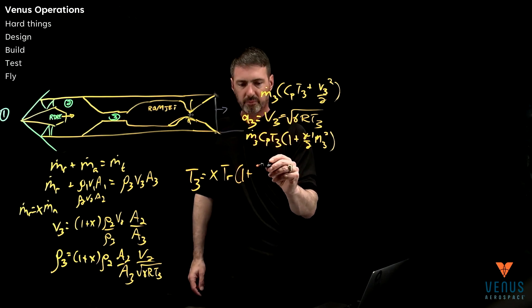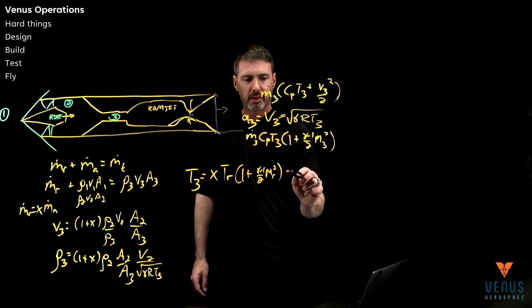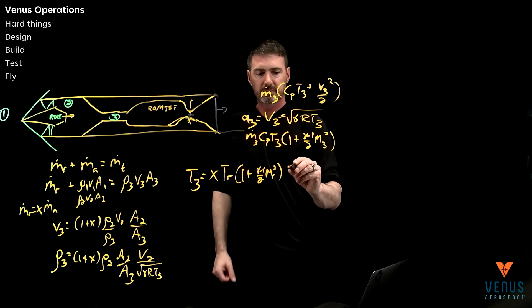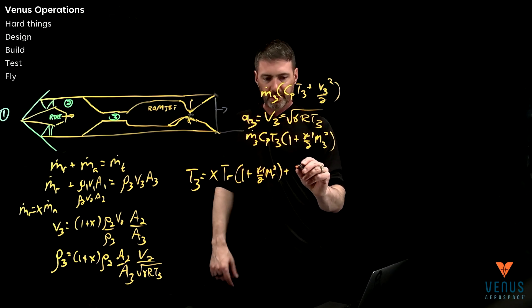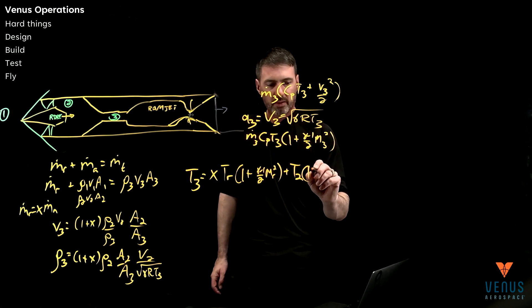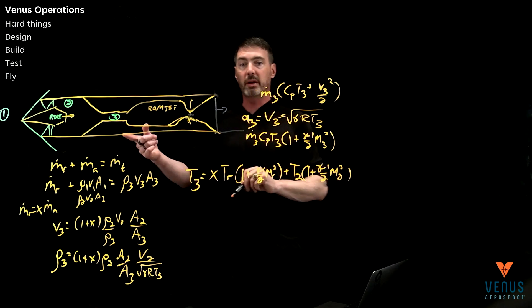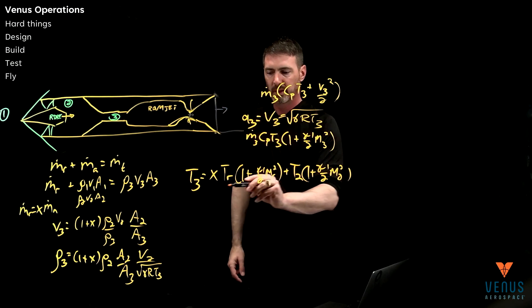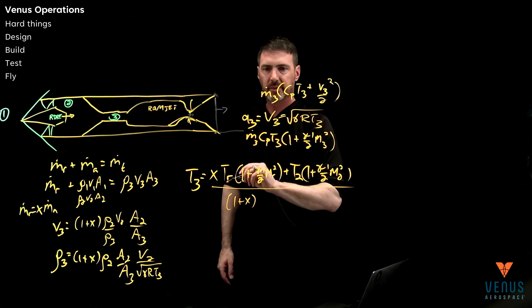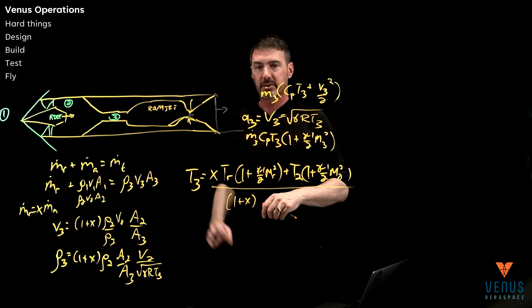That gives us 1 plus (gamma minus 1) over 2 times the rocket exhaust Mach number squared — that was the energy coming from the detonation engine. Then you have the energy coming from the air, which is T2 times 1 plus (gamma minus 1) over 2 times Mach 2 squared, where Mach 2 is subsonic. All of that gets divided by (1 plus x), because on the far side of the term we had the total mass flow adding up — M3 is (1 plus x) times the mass flow rate of air.